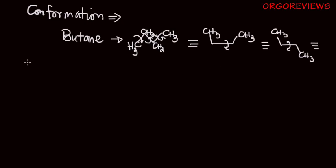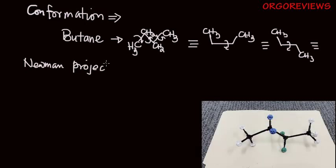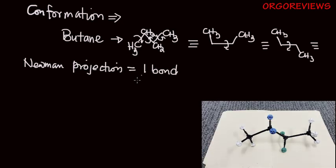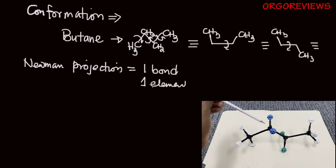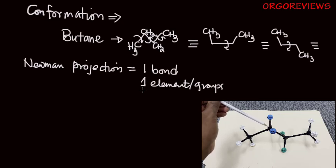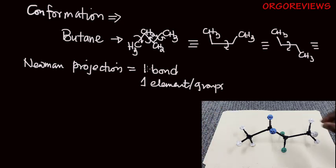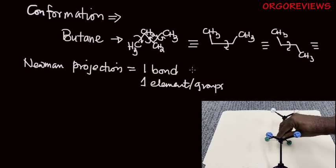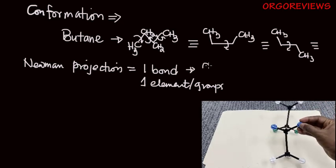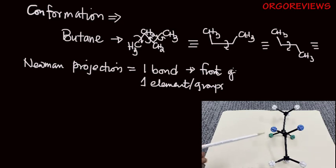Now let's take a look at what a Newman projection is. A Newman projection is just looking at the molecule by focusing on one bond at a time — one element or groups at a time. When you focus on one bond, you're looking at two different groups: you have the front group and then you have the back group.